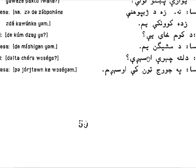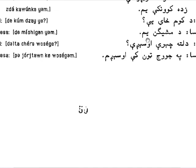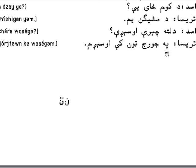Teresa responds: 'de michigan yam' — I am from Michigan, the state of Michigan in the United States. Asad asks: 'delta cere osegi?' — 'delta' means 'here,' 'cere' means 'where,' 'osegi' means 'you live' — where do you live? Teresa responds: 'pa georgetown ki osegi um' — I live in Georgetown.